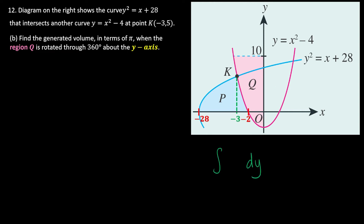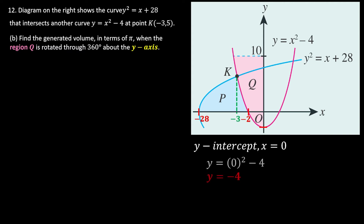When rotating about the y-axis, we get circles. We need to find the boundaries, which are the y-intercepts. We find the y-intercept by setting x = 0 and substituting into the equations.